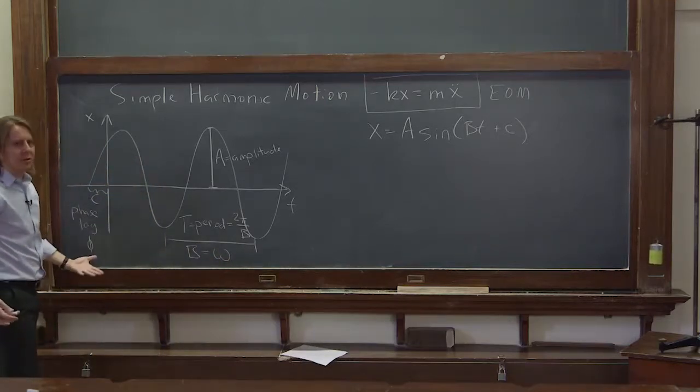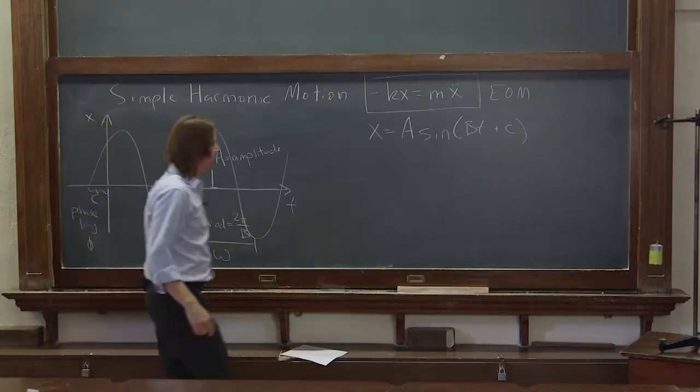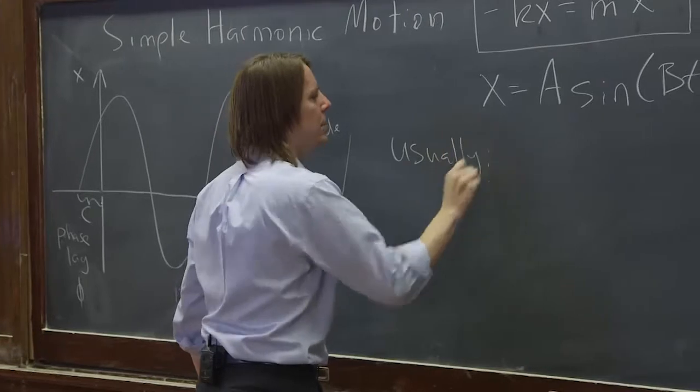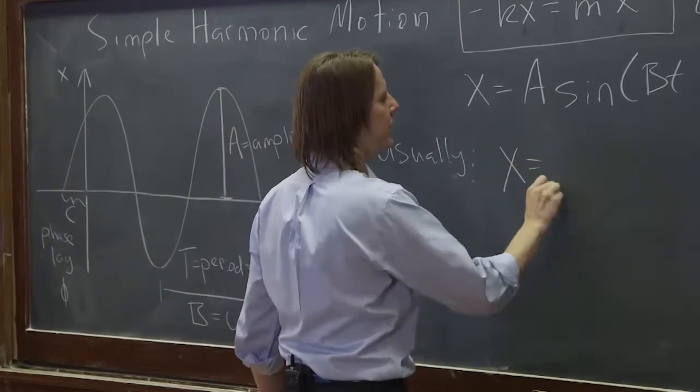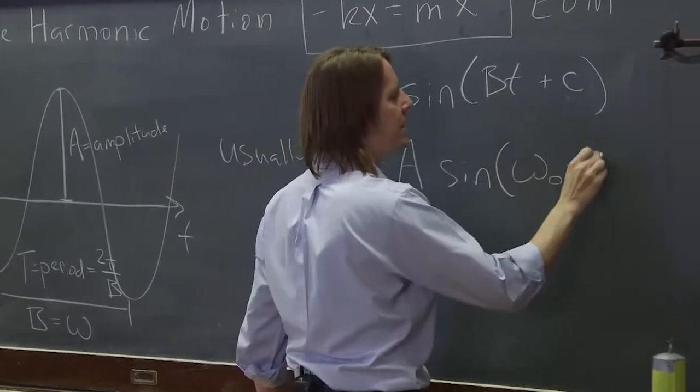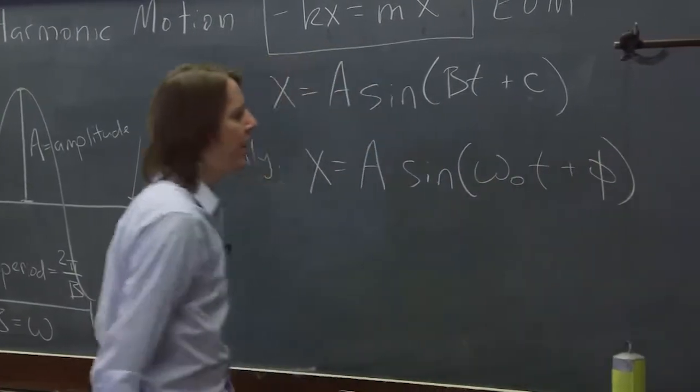So we actually have a fairly normal sinusoid. So this is usually written for an oscillator that x equals A sine, and then we call that omega 0 T plus phi.